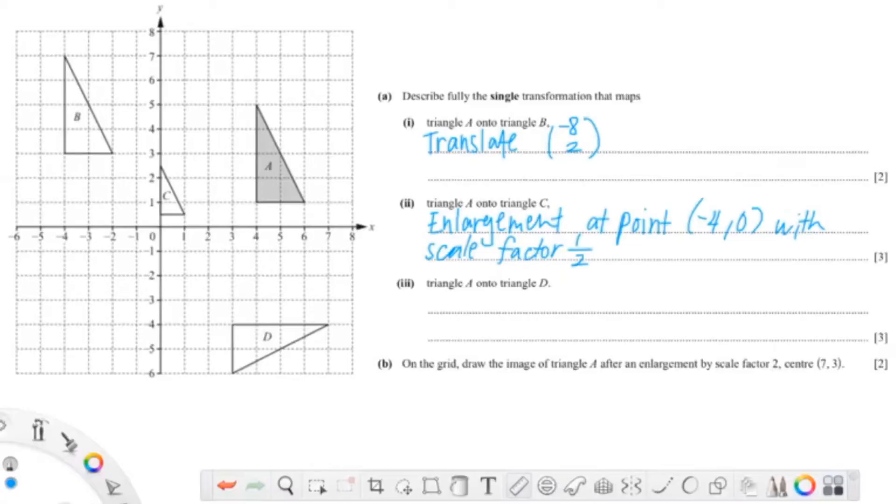So the third question is asking about A to D. We can see from this it's a rotation. It rotates 90 degrees clockwise—or you could also say 270 degrees anti-clockwise, but it's more common to just write 90 degrees clockwise. Because again this is 3 marks, we've only given 2 points. We need to find the third point, which is the point where the object rotates.